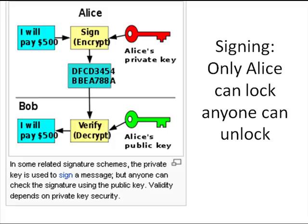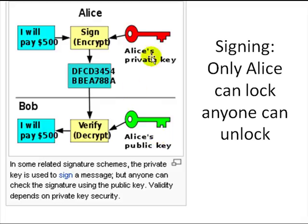The second purpose of the public key is signing. Only Alice can lock something with her private key. So Alice writes a check for $500 and signs it — meaning she encrypts it using her private key — then mails it. Now anybody can open it using Alice's public key. Bob opens the check using Alice's public key, and since only Alice's public key works, he knows only Alice could have sent it. This is called signing, and Alice never gives her private key to anybody.